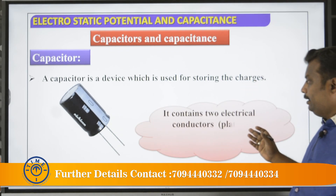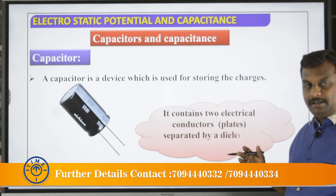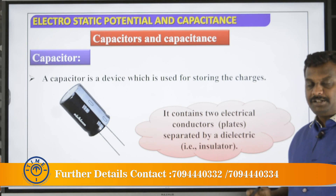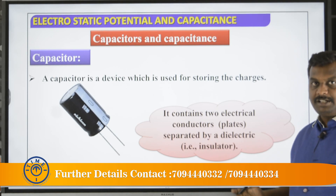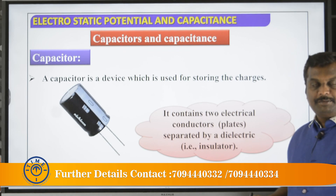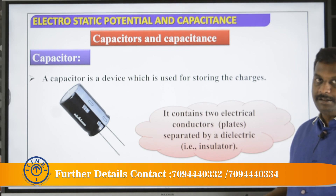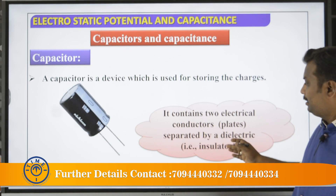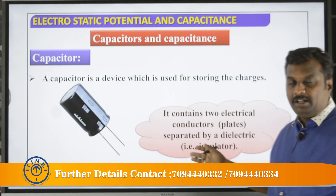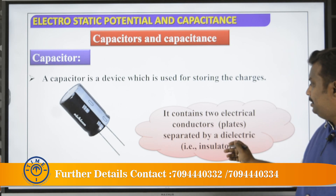A capacitor has two plates — one positively charged and one negatively charged. Between them there is air or vacuum, and sometimes we keep a dielectric material. Dielectric material is an insulator.